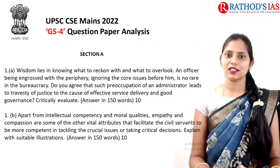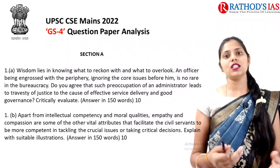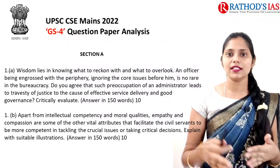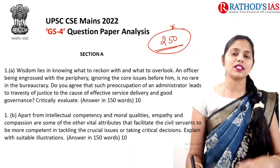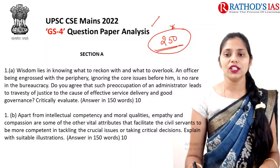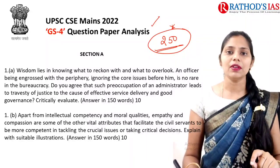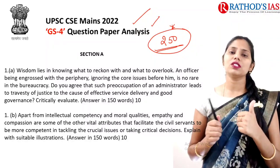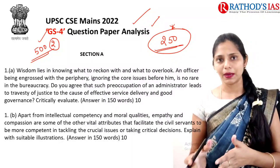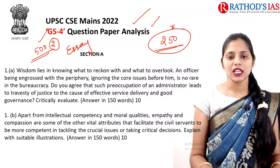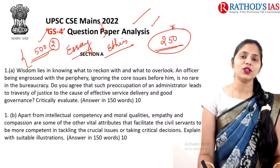Hi, this is Usha, welcome to Rathod's IAS classes. Today in this lecture we are going to see analysis of GS Paper 4. GS Paper 4 in UPSC includes ethics, integrity and aptitude. This paper is for 250 marks and is one of the deciding factors — it will decide whether your name will be in the final list or not. The important papers to prepare are your optional paper (500 marks, two papers), your essay, and ethics.